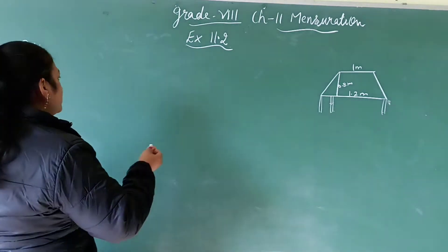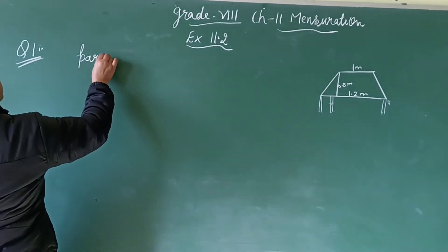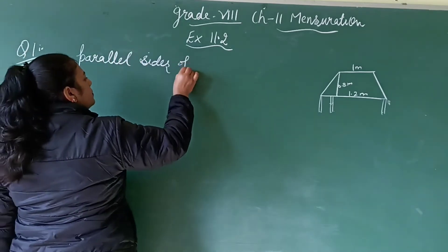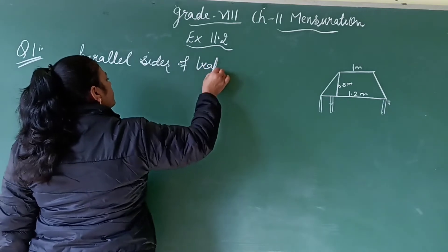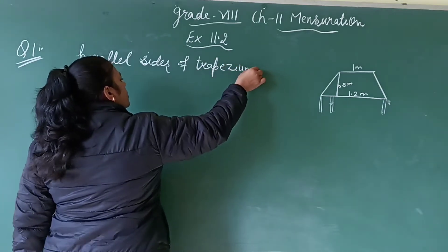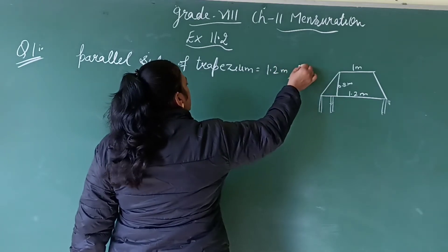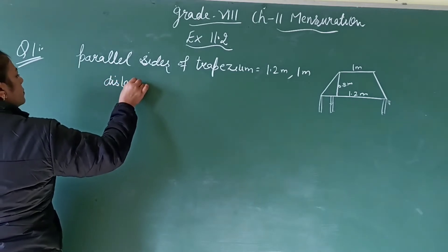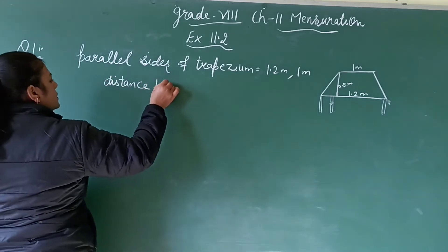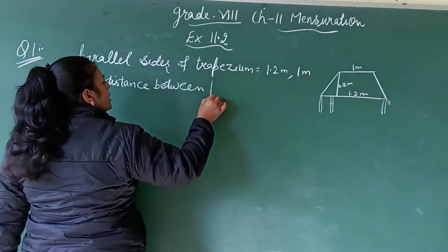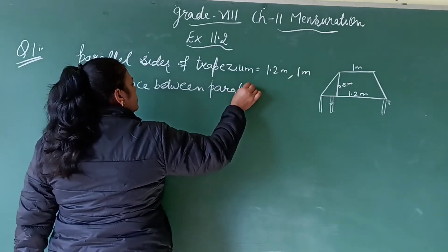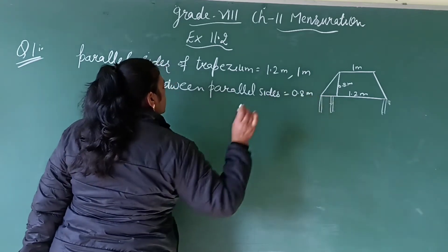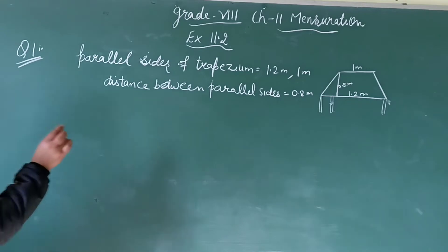This is a trapezium. So firstly we write the parallel sides of trapezium, that is 1.2 meter and 1 meter. And distance between them, distance between parallel sides, that is equal to 0.8 meter.